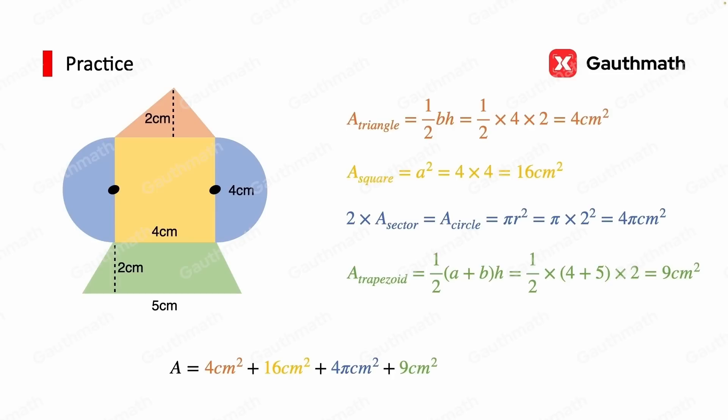Now we have the area of all the shapes. Then we add them up. A equals 29 plus 4π. A equals 41.56cm². That's it for today's lesson. See you next time.